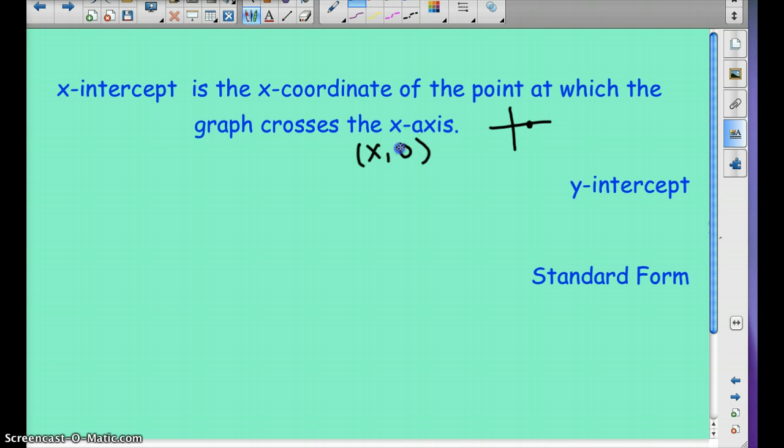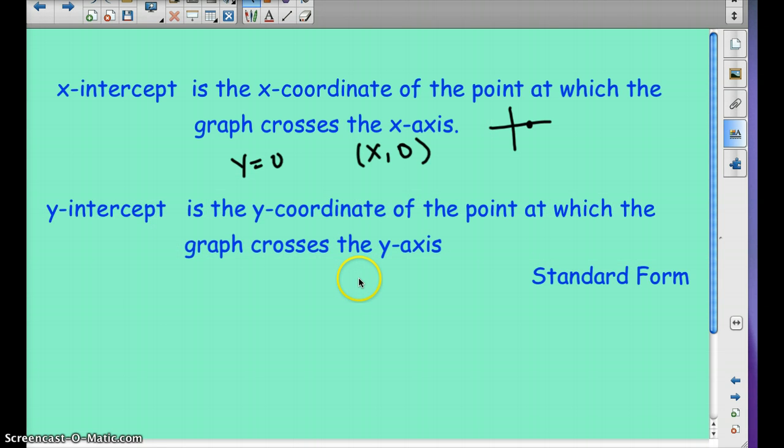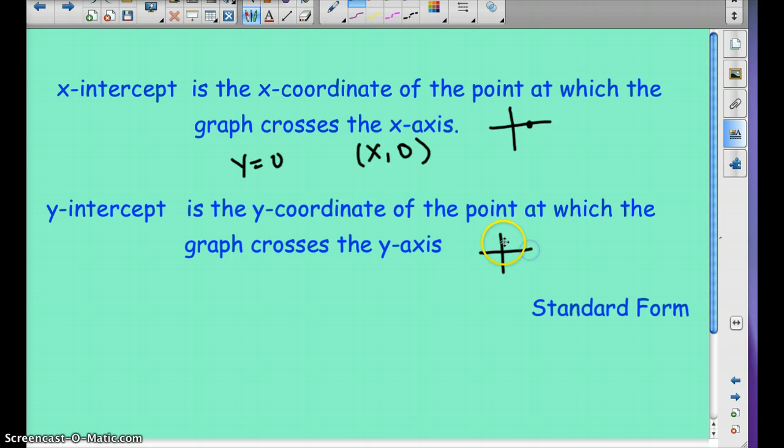So when y equals 0, that's your x-intercept. So y has to equal 0. Now, your y-intercept is the opposite. It is the y-coordinate of the point at which the graph crosses the y-axis. So if we were to draw a little graph here, it's where it crosses the y-axis. So it would be 0, y. And you can find the y-intercept algebraically by plugging in 0 for x.